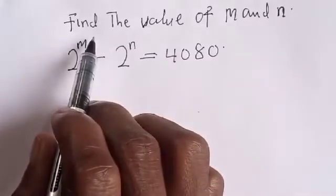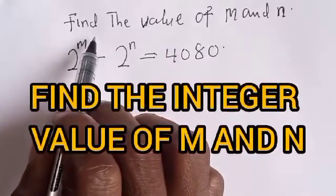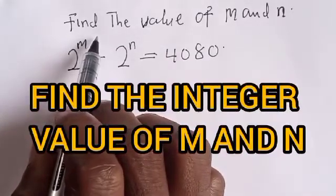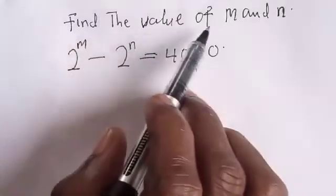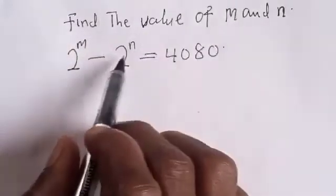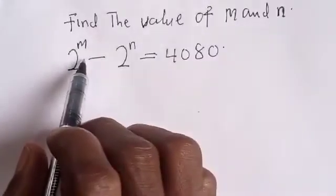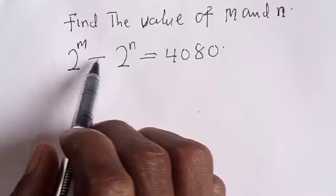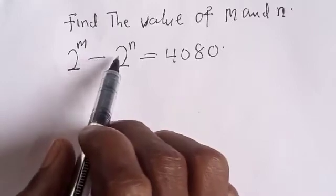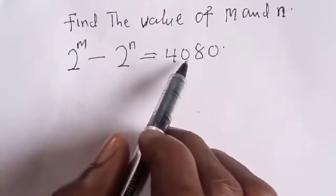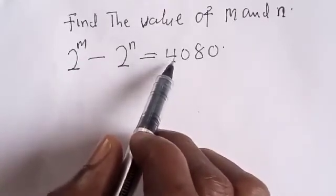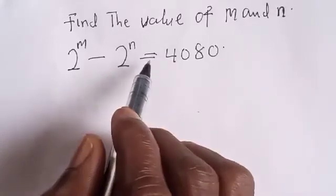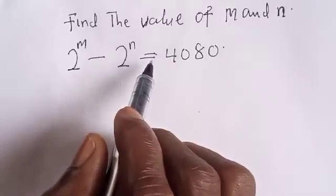Hi everyone, welcome to my class. In today's class we want to look at how to find the value of m and n from this question: we have 2 raised to power m minus 2 raised to power n is equal to 4080.